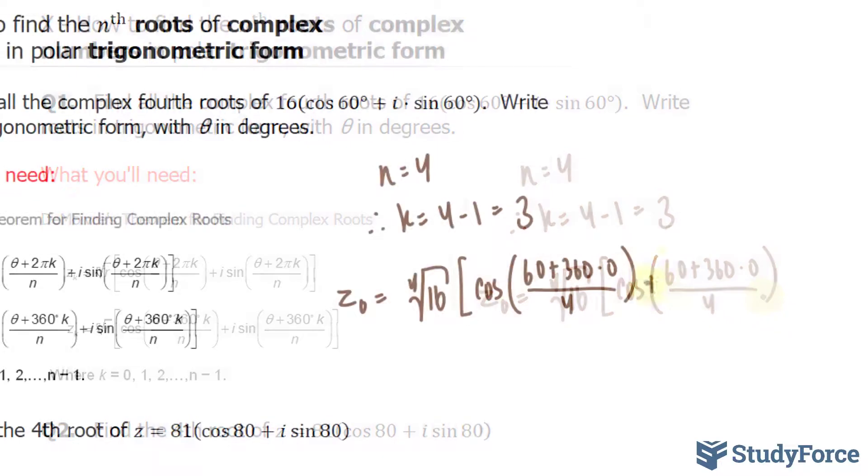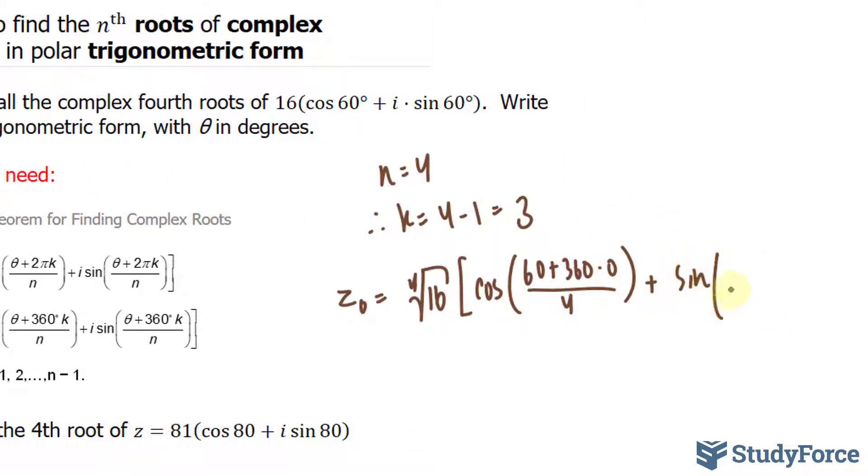Plus sine, the angle was 60, plus 360 times 0, over 4. Simplifying the inside here, we have 60 divided by 4, that's equal to 15. So we have the fourth root of 16, which is 2, cosine 15 degrees, plus sine 15 degrees times i. That's the first complex root.